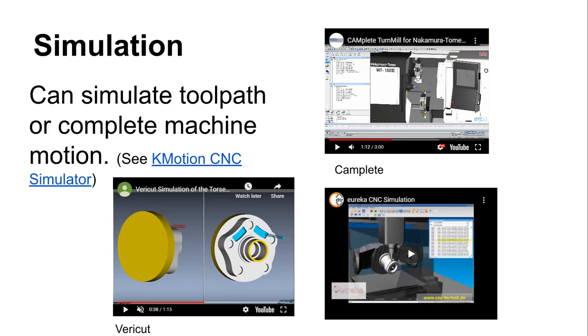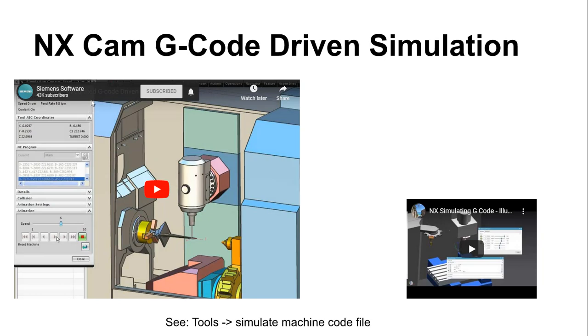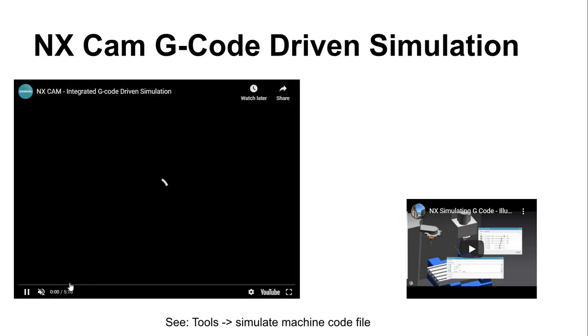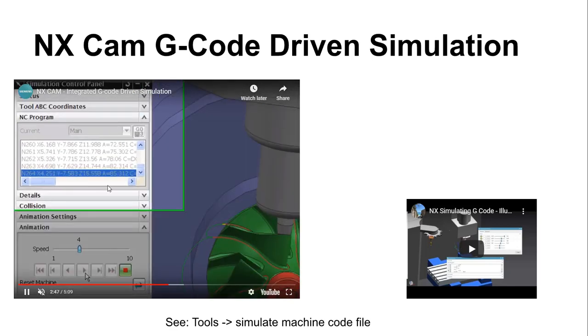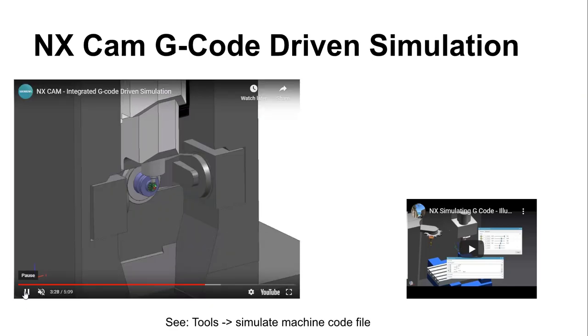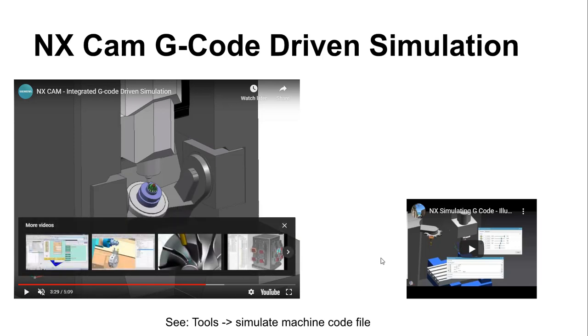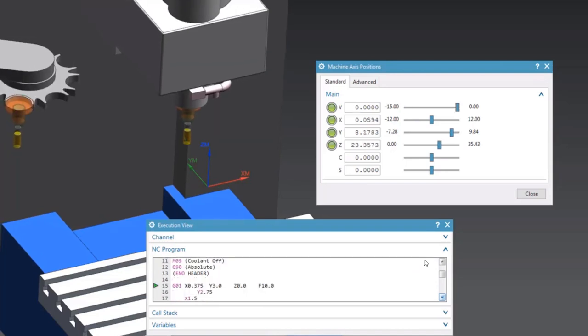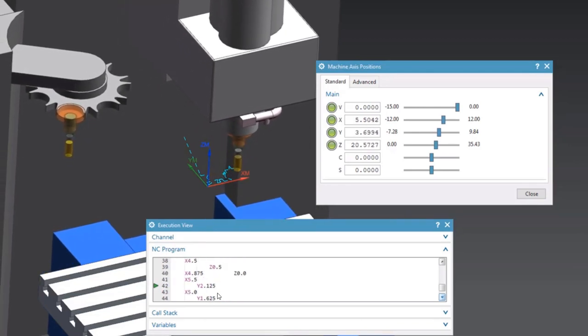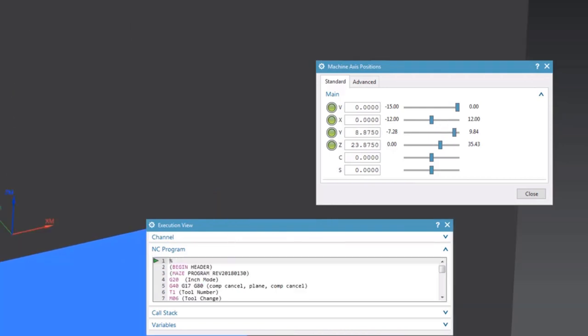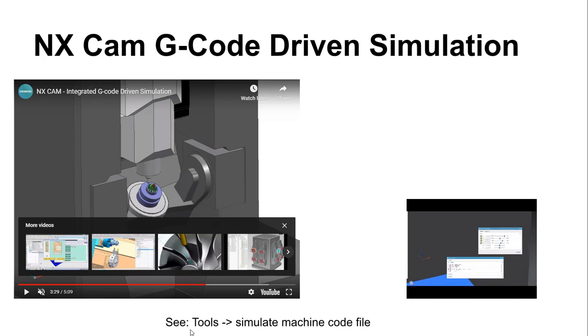This is NX's sales video on machine tool path simulation. I'm going to suggest that you go through that and see what NX has to say about their integrated simulation verification software. I did post—I'll try to replace this once it's uploaded on YouTube and finished processing—this is an older version. This is some of the stuff you can do with NX, actually running a manually written program. I'll post an updated tutorial on how to do that.